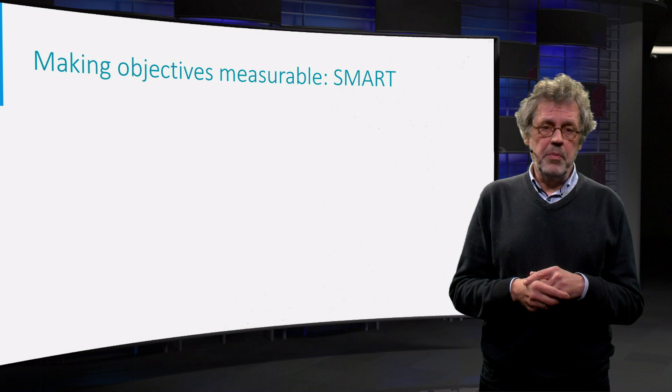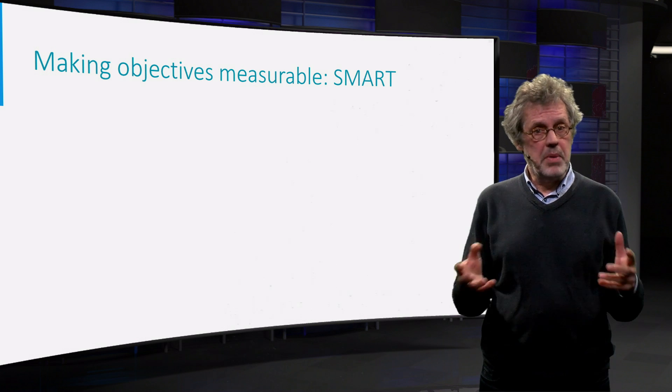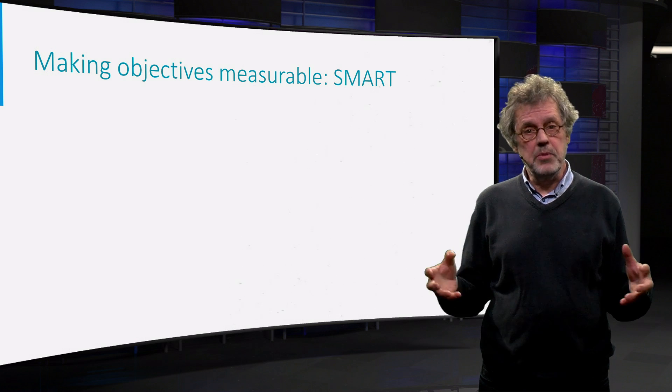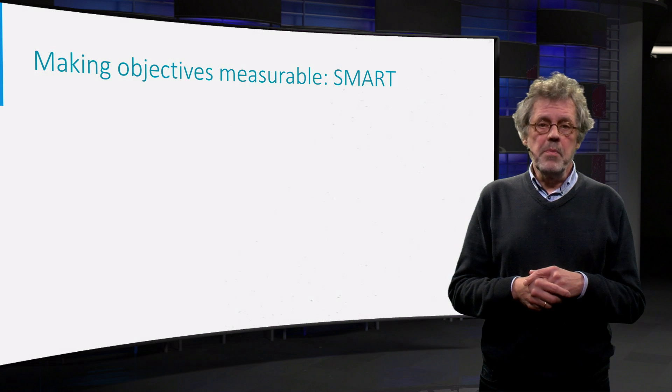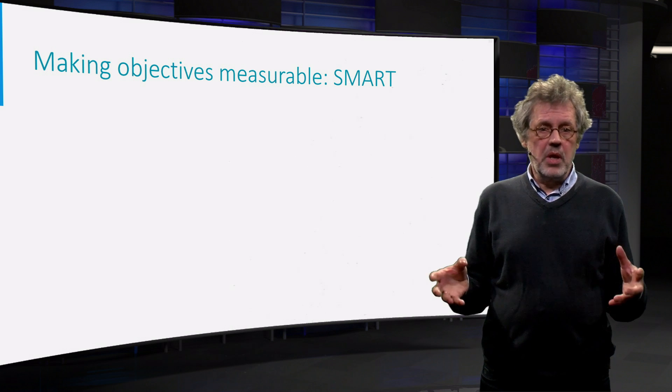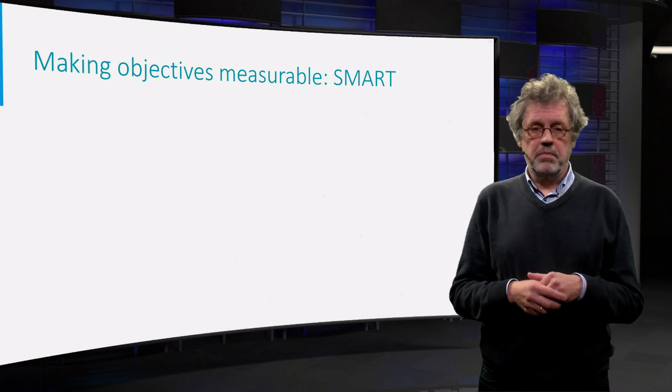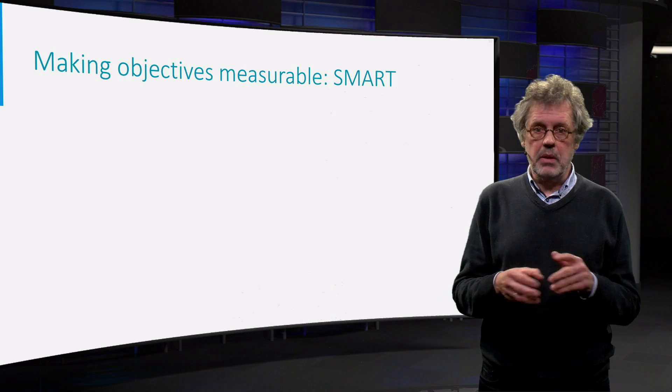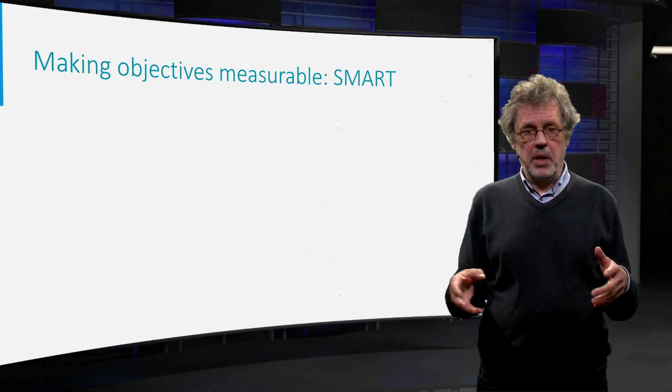So now that we know what the objective of your business model innovation can be, the next issue is how to make this objective as measurable as possible. A common problem is that the objectives of business model innovations are vague and broad. Maybe they are clear to you now, but not to your colleague next week. Therefore we make use of the SMART reasoning.